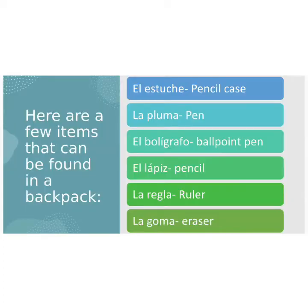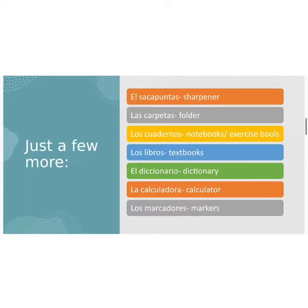Here are a few items that can be found in your backpack: el estuche, la pluma, el bolígrafo, el lápiz, la regla, y la goma. We also have el sacapuntas, las carpetas, los cuadernos, los libros, el diccionario, la calculadora, and finally, los marcadores.